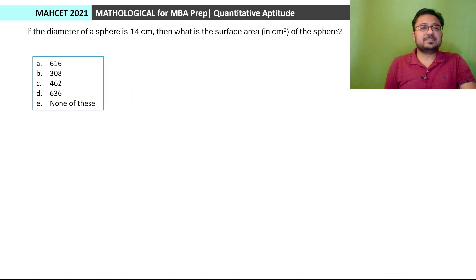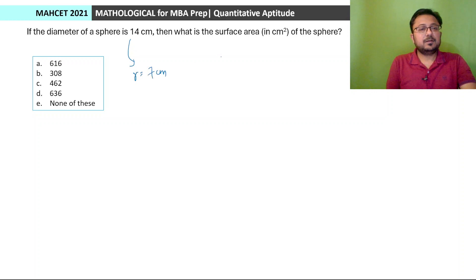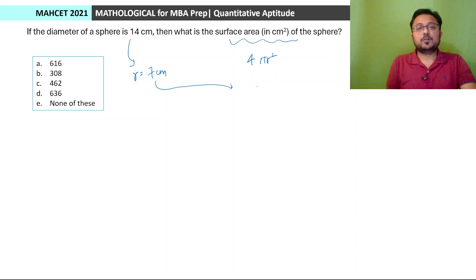Next: If the diameter of a sphere is 14 cm, what is the surface area? Diameter is 14, so radius = 7. Surface area = 4πr² = 4 × (22/7) × 49 = 4 × 154 = 616. Option A.